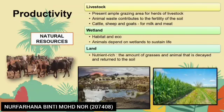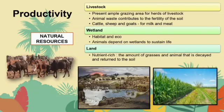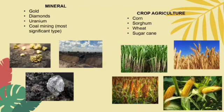I'm Noor Fahana. I will present about the productivity of tropical grasslands and savannas. There are five natural resources. One is livestock: grazing and progressing areas for herds of livestock. Animal waste contributes to the fertility of the soil — cattle, sheep and goats provide meat. Second is wetland, which is habitat and ecology for animals and plants. Animals depend on wetland to sustain life. Third is land, which is nutrient-rich because of the amount of grasses and animal matter that decays and returns to the soil. Next are minerals such as gold, diamond, uranium and chromite. The last one is crude agriculture such as cotton, sugar and sugar cane.